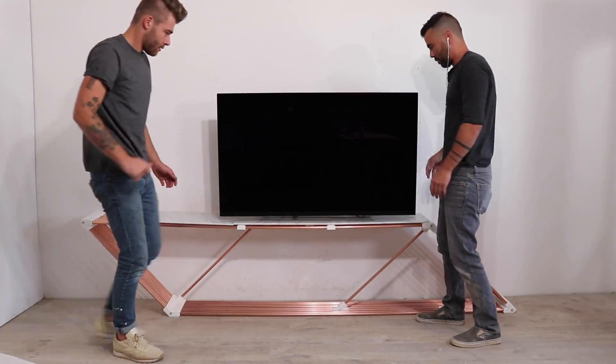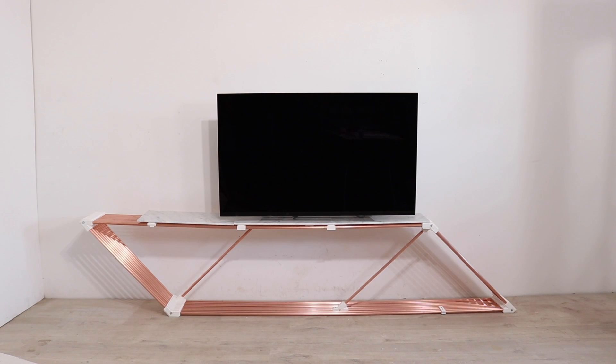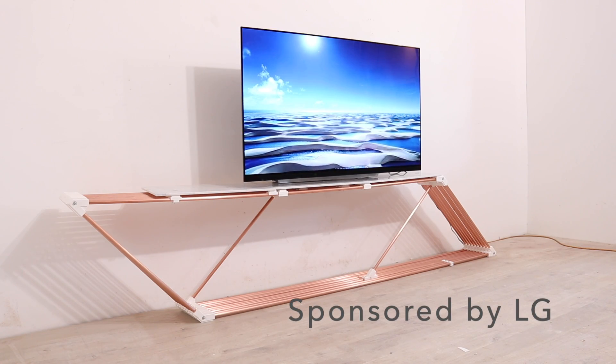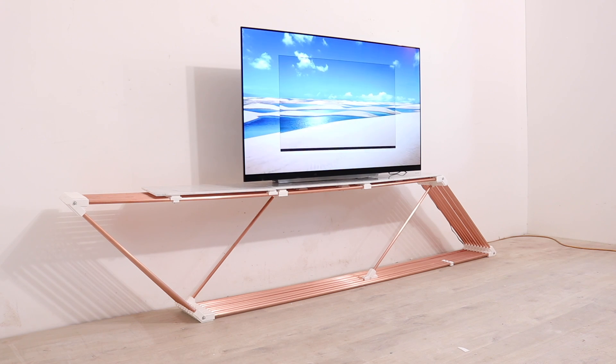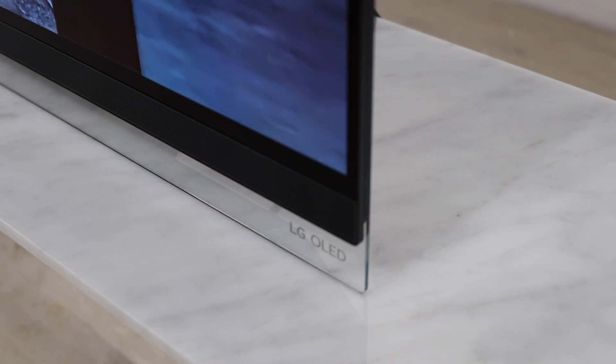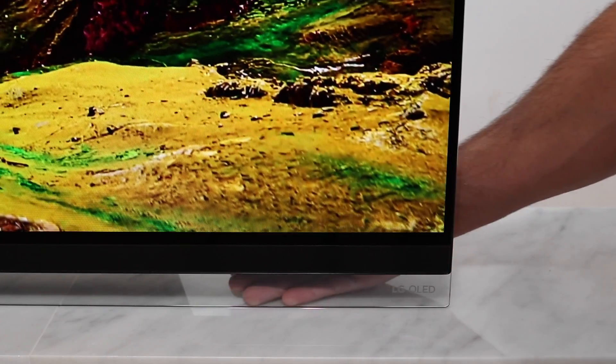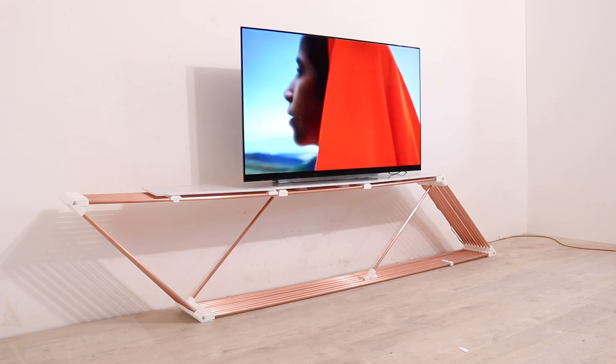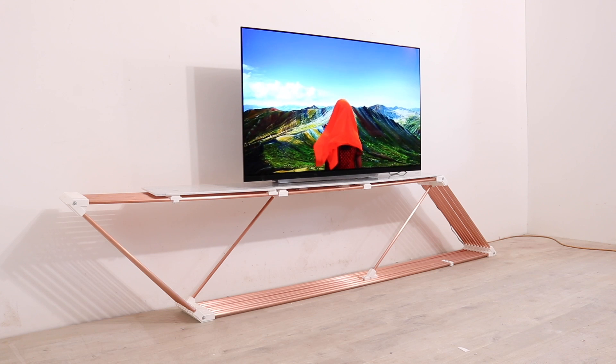LG makes this incredible 4K wallpaper thin 55 inch E9 OLED TV. The LG E9's unique floating design is created by a glass bezel that creates a firm base for the TV while giving it a modern and minimal aesthetic. Typically TVs need to be mounted on the wall to create this look and it's really cool that LG figured out an easier way.